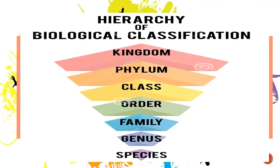To make things clearer, I've uploaded a picture of the hierarchy of biological classification. We start from the highest rank, which is the kingdom, down to the lowest rank, which is species. The order of the hierarchy is: kingdom, phylum, class, order, family, genus, and then species. We're going to be discussing each of those and describing the different characteristics of each level.